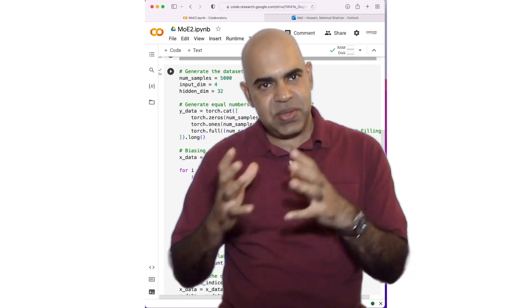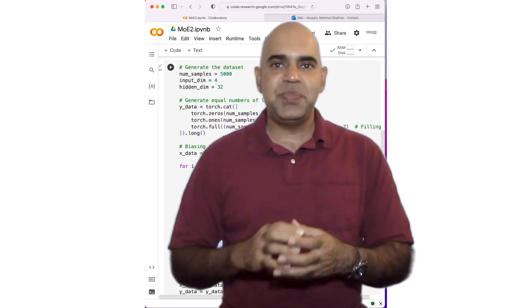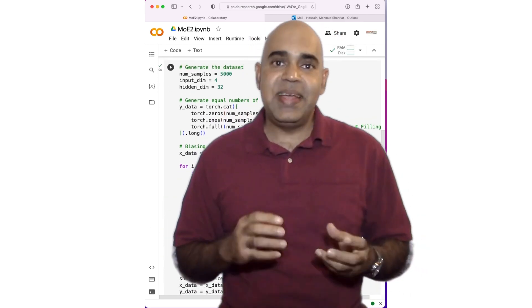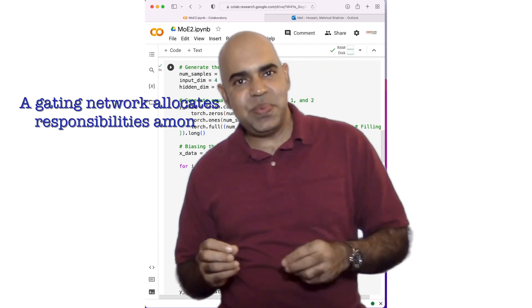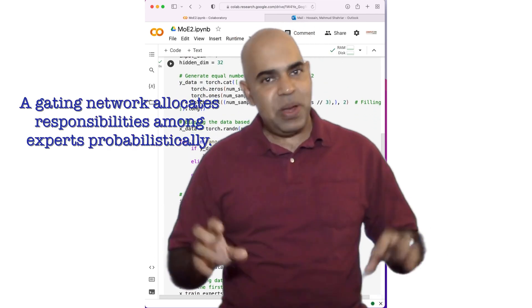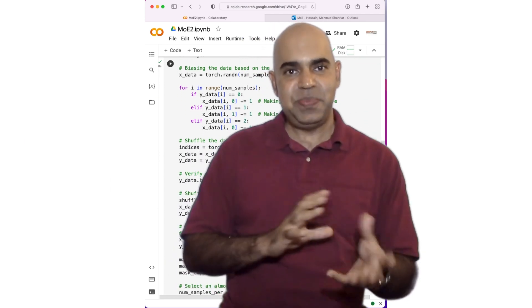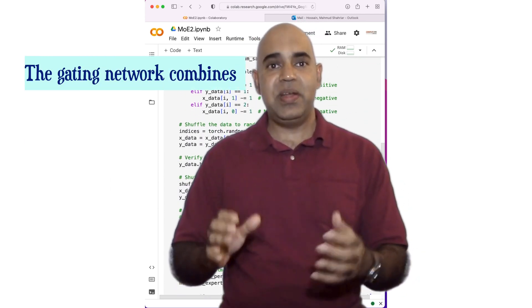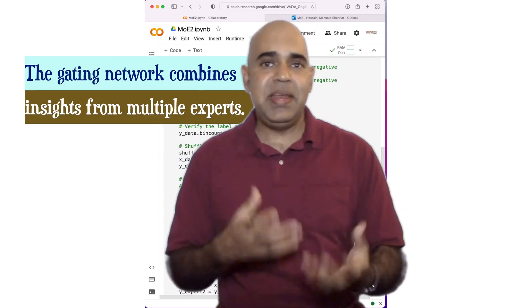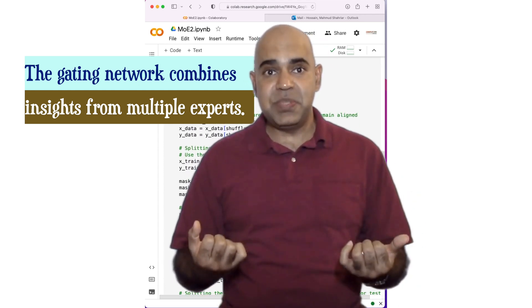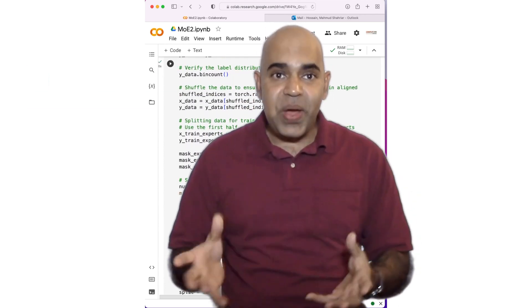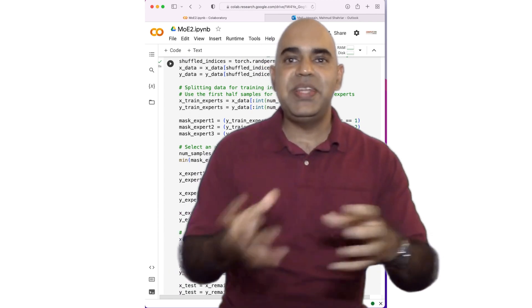Rather than exclusively choosing a single expert for each input, the gating network allocates responsibilities among experts probabilistically. This means that for a specific input, the gating network might decide to combine insights from multiple experts, assigning different weights or importance levels to each expert.